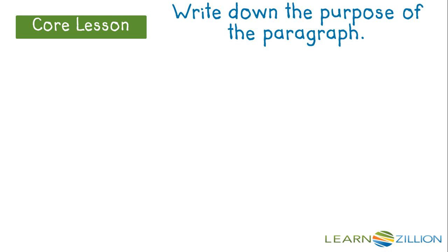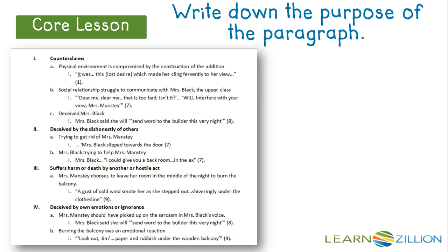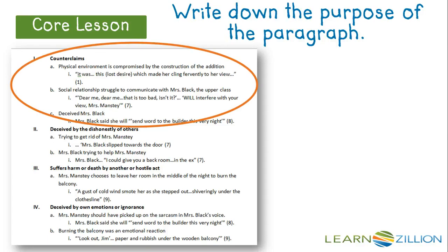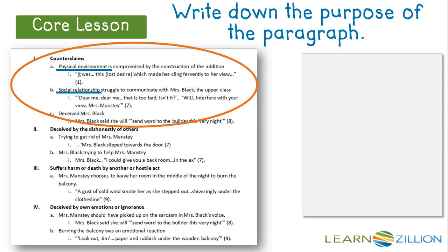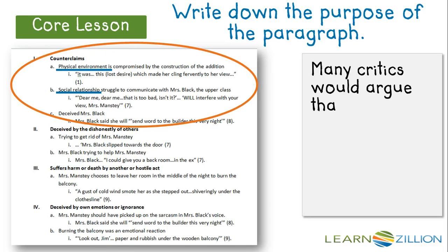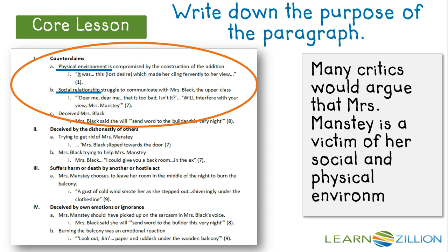The first thing I need to do is write down the purpose of the paragraph. I'm going to take out the outline I already created. Remember, we're starting with our body paragraphs, not the introduction — we'll look at the introduction in another lesson. It looks like my first body paragraph is going to be about the counterclaims. This paragraph is about what the opposing view believes: that Mrs. Manstey is a victim, dealing with the physical and social environments. I'm not disproving these claims in this paragraph; I'm just stating the opinion of the other side. So I'll write: "Many critics would argue that Mrs. Manstey is a victim of her social and physical environment." I think this will work because it recognizes the other side of the argument.